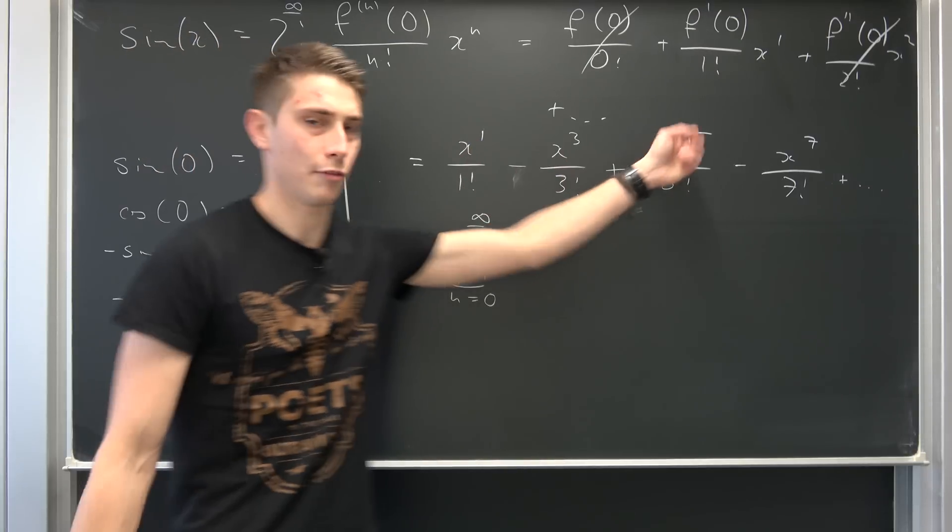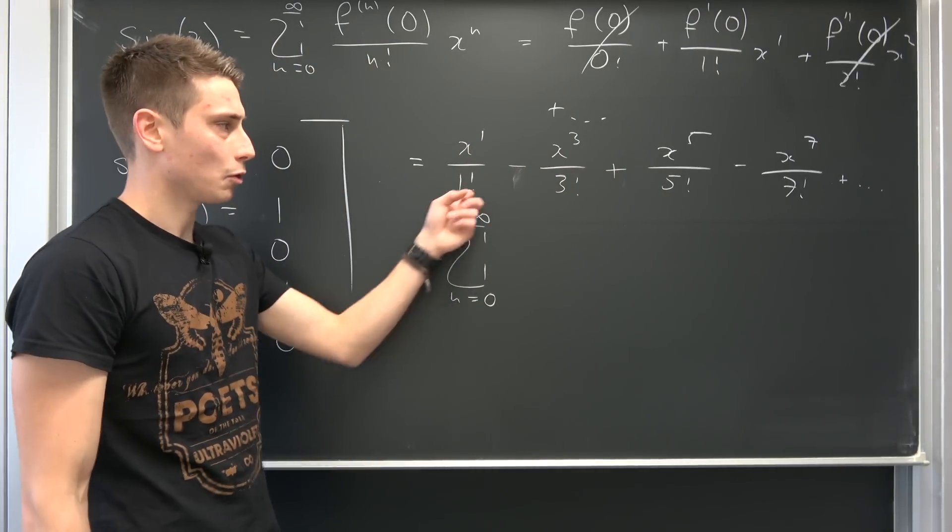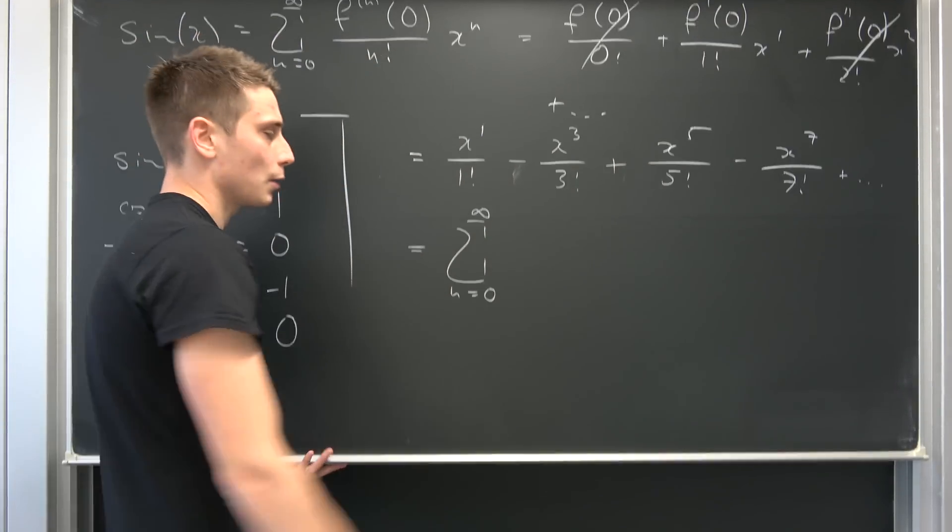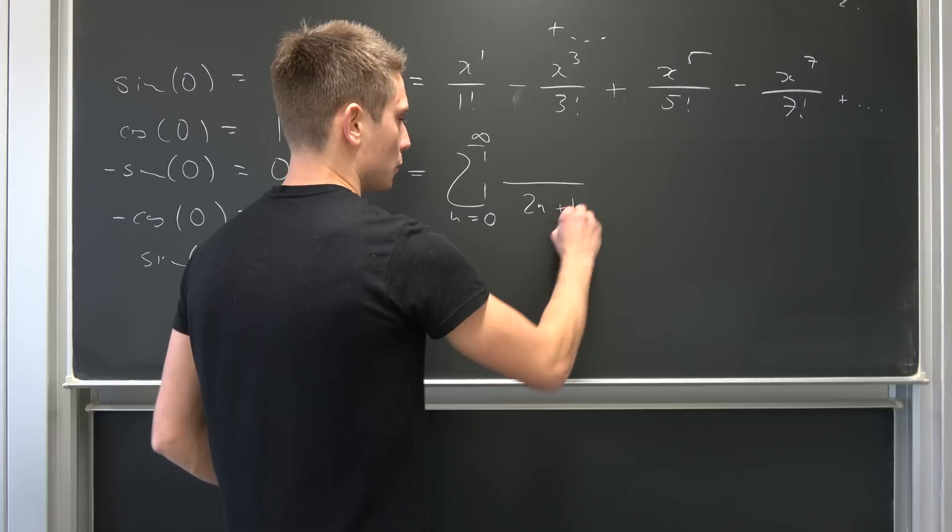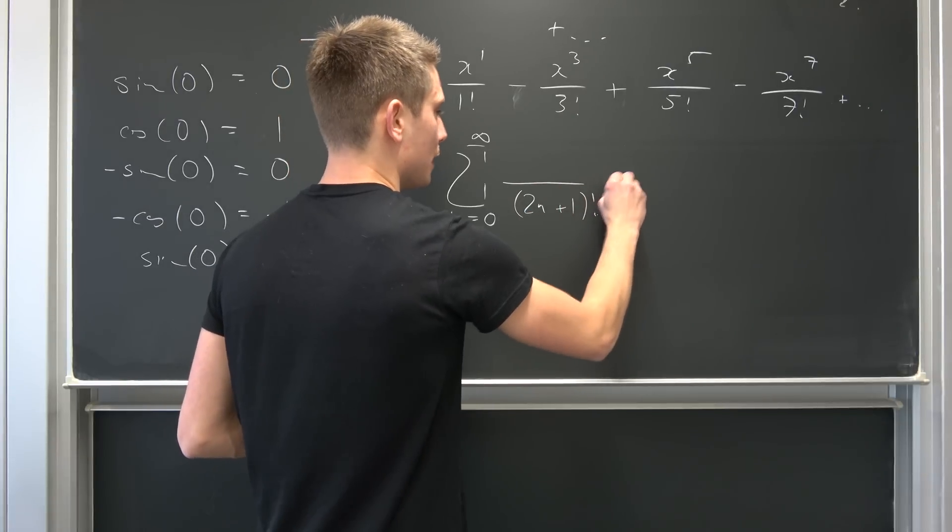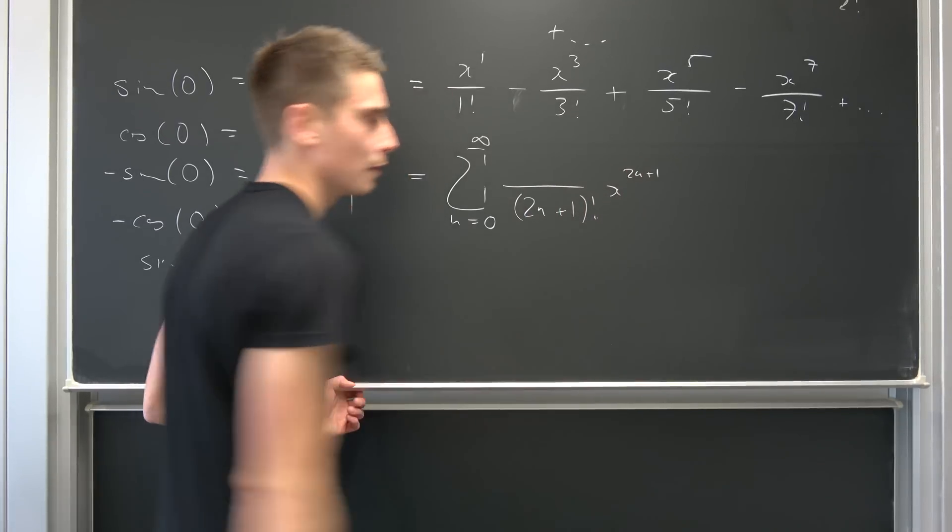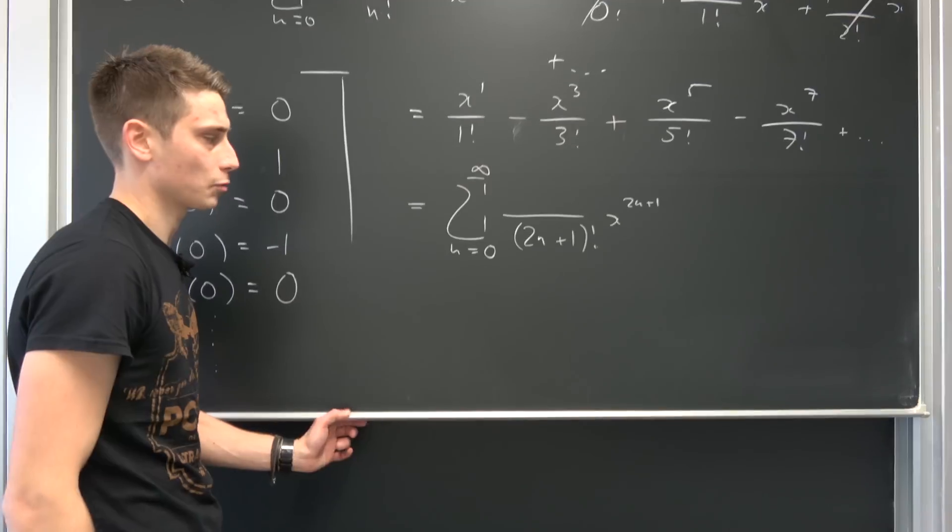So one and three and five and seven. Meaning, also here in the factorial, we are going to end up with two n plus one. Two n plus one factorial. And we have x to the two n plus one power. So you see, this is quite easy. You can check this for yourself. If you plug in zero into here, this is x to the first power over one factorial.